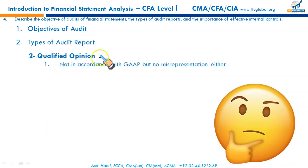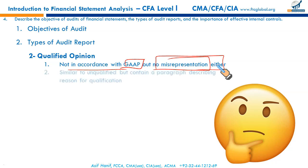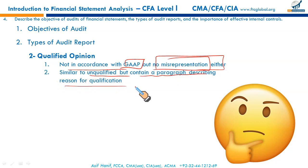The qualified opinion is given when financial statements are not fully in accordance with GAAP — certain transactions are not compliant with US GAAP requirements — but there is no misrepresentation. The auditor may be uncomfortable with engineered numbers such as depreciation, inventory valuation, or employee obligations. A qualified opinion is similar to an unqualified opinion but includes an additional paragraph describing the reason for qualification — why the auditor disagrees with certain numbers on the balance sheet or income statement.